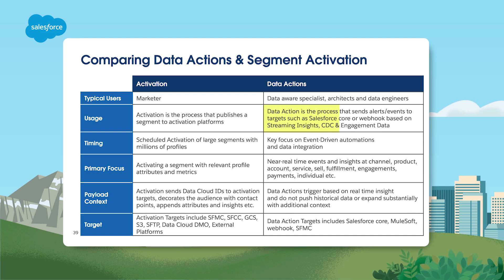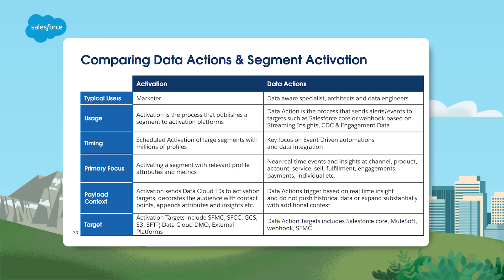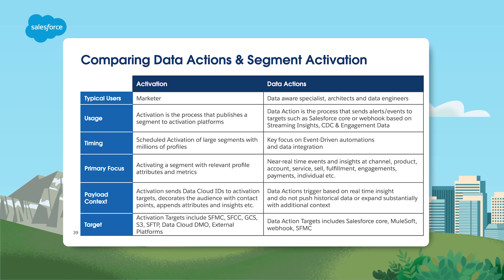Data actions drive events using streaming insights. Data action targets are the destinations where the result of a data action can be triggered. Supported targets include webhooks, an event-driven API target — kind of like an endpoint — Salesforce platform events using the core event bus used to trigger flow applications, and Marketing Cloud to send an email or journey builder API event.